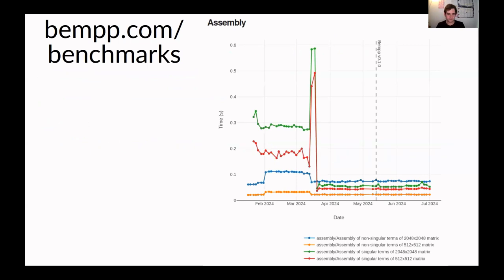Just a couple of slides about BEMPP to finish off. We did release a first version of BEMPP-RS, which is very much not useful for big problems yet but is a proof of concept. Using Criterion, we have benchmarks running three times a week on a workstation at UCL. If you go to bempp.com/benchmarks, you can see a plot of our current speed. You can also spot where I made a mistake because the runtime went up massively, and then when I fixed it the runtime went down — we're using this to keep an eye on performance consistency.